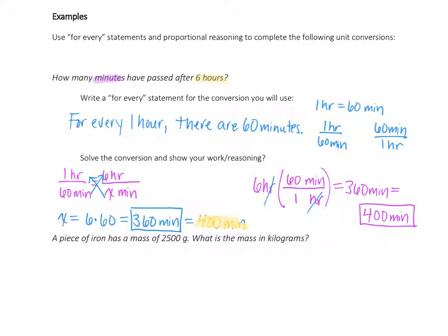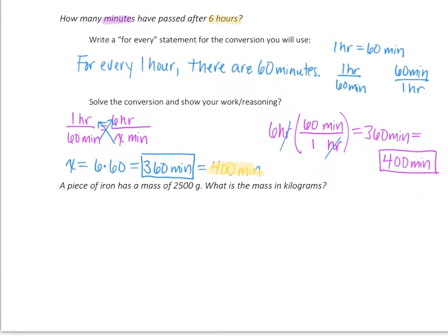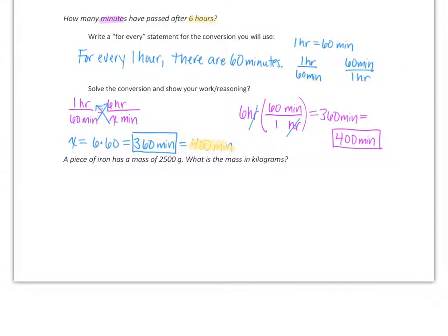Now not every conversion factor that we have we're going to know like we did for 1 hour and 60 minutes. Some other conversion factors we're going to need to look up, or you'll be given them. On the front of your blue notes package, you have a chart that has common metric prefixes and their values. We're going to use that to solve this second example. Here we have a piece of iron that has a mass of 2500 grams, and we need to convert that to the mass in kilograms. So here we want to use a ratio or a proportion to go from grams to kilograms. If you look on the chart on the front, you're going to see a column that gives the value of that particular metric unit, and that's going to be based on the plain unit.